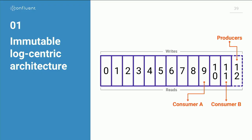We've seen companies all around the world adopting this type of architecture built around Kafka. The first and best known key element is this immutable, log-centric architecture — really the data structure for streams. You have this sequence of time-ordered events. It's multi-consumer — anybody can tap into it, subscribe to it, go back and reload from the beginning of time. That's a really powerful abstraction. But it's not the only thing.